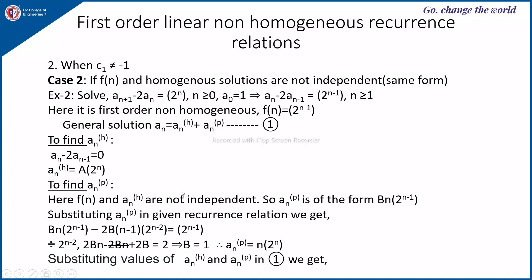To find the particular solution, observe that the homogeneous solution is 2ⁿ and f(n) is also 2ⁿ⁻¹, so they are not independent. Therefore the particular solution is of the form b·n·2ⁿ⁻¹. Substituting into the recurrence: b·n·2ⁿ⁻¹ - 2·b·(n-1)·2ⁿ⁻² = 2ⁿ⁻¹. Dividing by 2ⁿ⁻²: 2bn - 2bn + 2b = 2, which gives b = 1. Therefore aₙ(p) = n·2ⁿ.